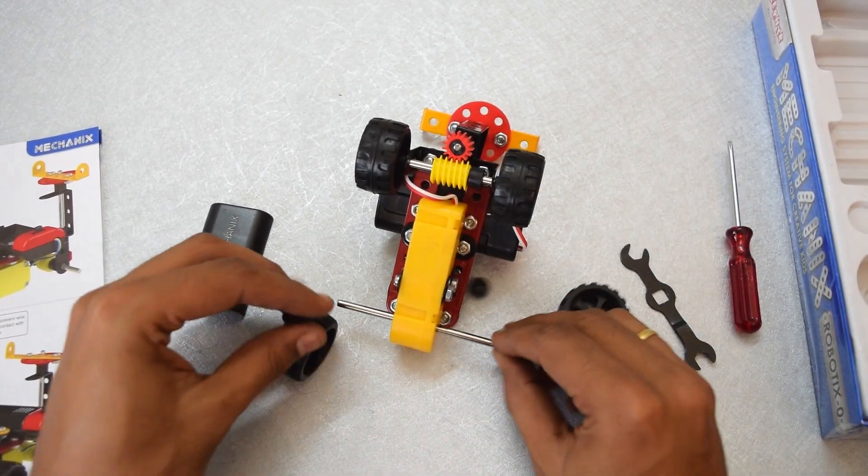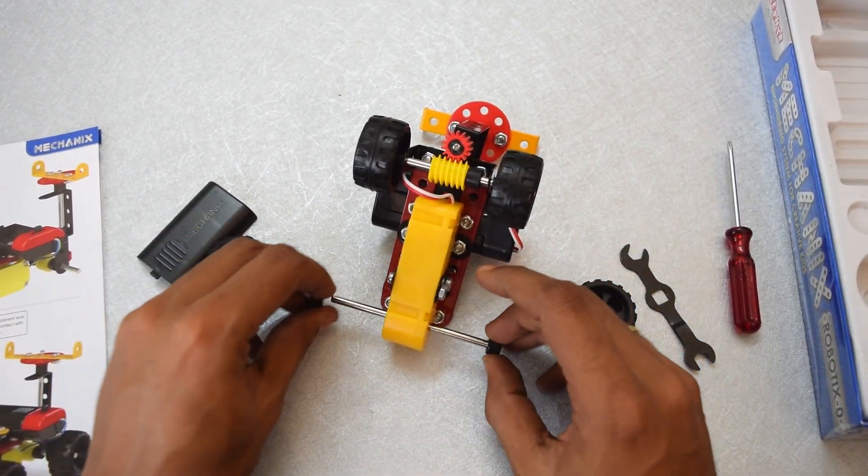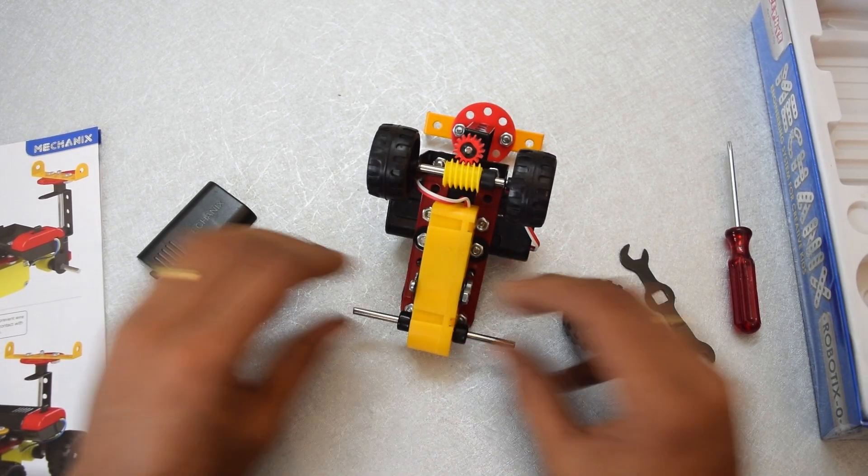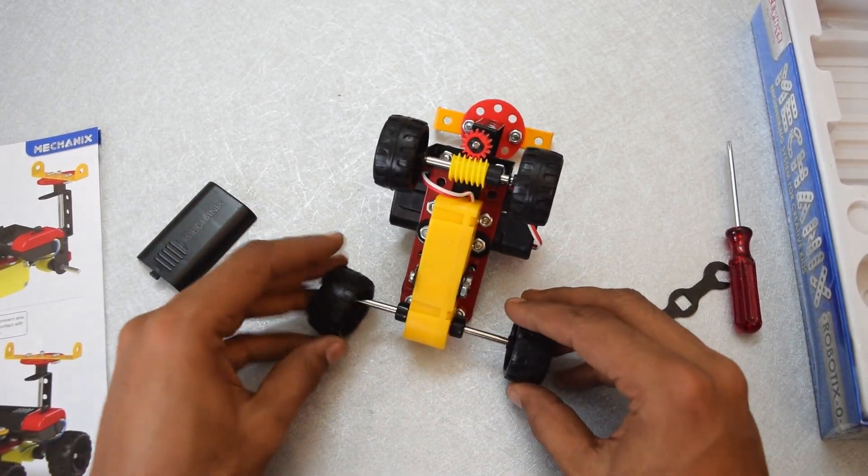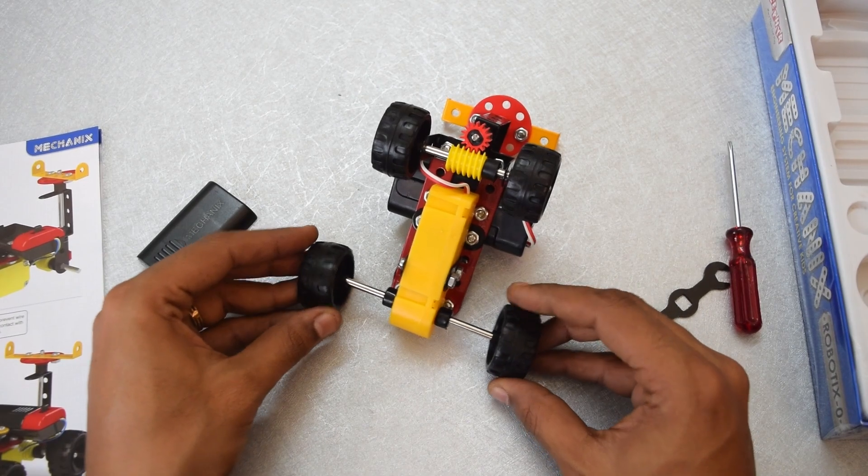It is asked to go ahead and install two pieces of washer over here. Okay, let's go ahead and do that. And now install the tires.